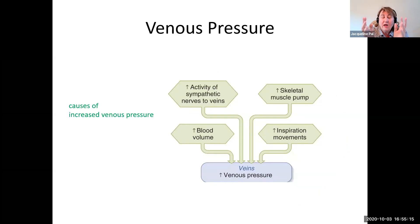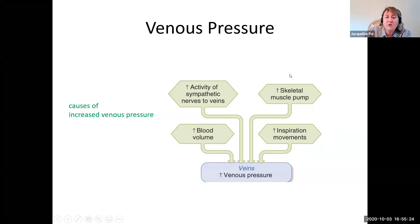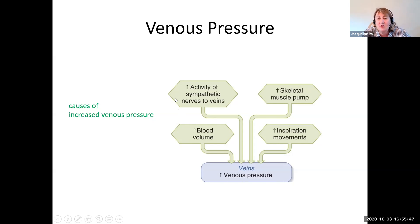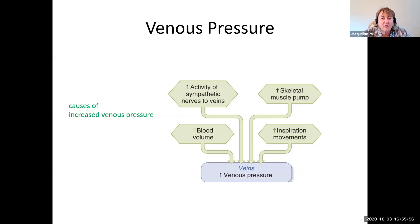Let's look at contributing factors to venous pressure. If we increase our skeletal muscle pump we increase venous return. If we increase inspiration we do the same. It also applies to blood volume — increasing blood volume means more blood on the venous side and therefore more venous pressure. Finally, if we increase activity of sympathetic nerves to veins, because veins still have smooth muscle albeit less than on the arterial side, we can get some vasoconstriction occurring on the venous side.